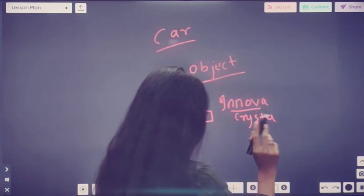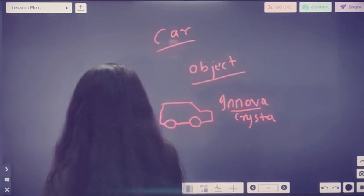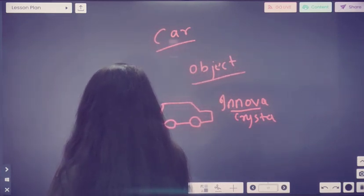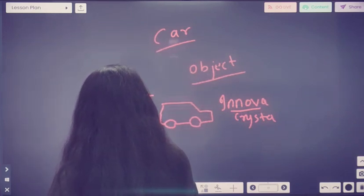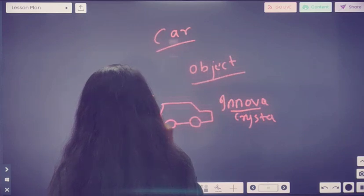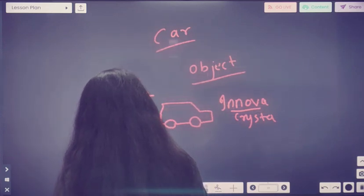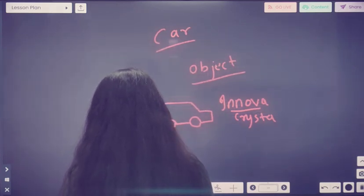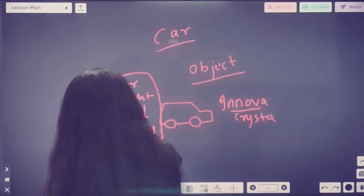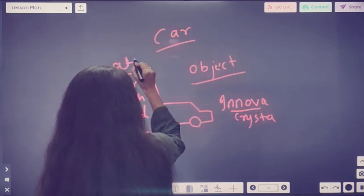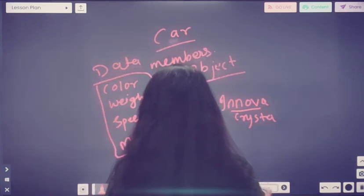This object is going to have certain features: it is going to have a color, it is going to have some weight, it is going to have a maximum speed, it is going to have some safety features, and it will have a model. All of these things are called data members.